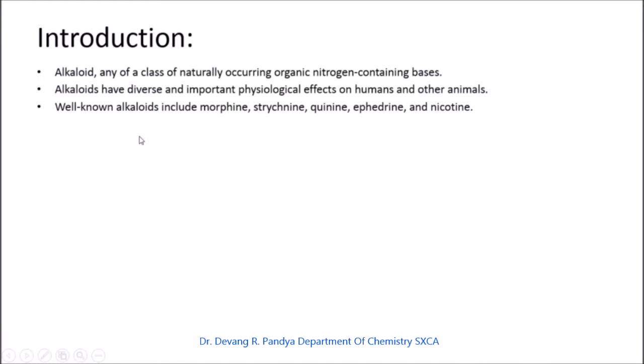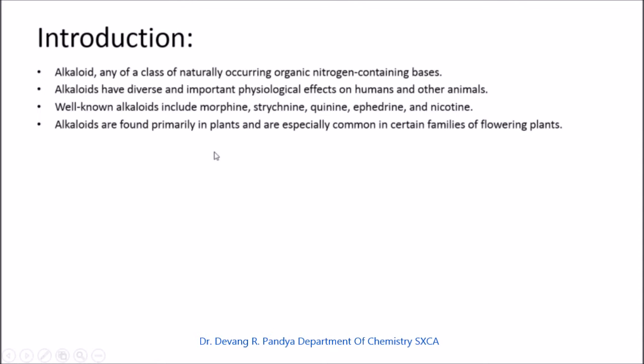Well-known alkaloids include morphine, quinine, ephedrine, and nicotine, though in our syllabus only morphine, quinine, and a few others are included. Alkaloids are found primarily in plants, and are especially common in certain families of flowering plants.